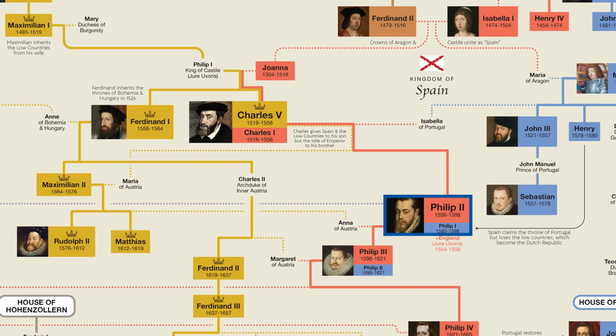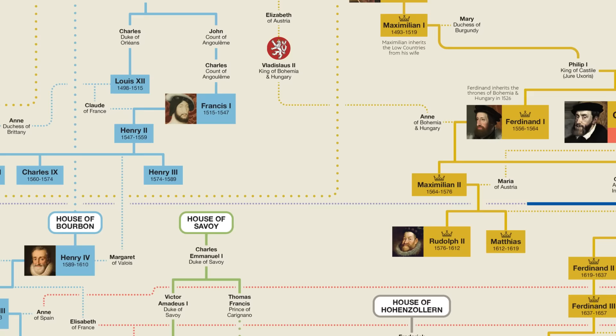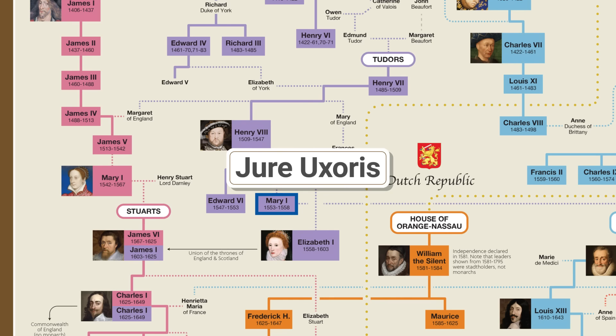Philip II was hence the ruler of Portuguese colonies as well, such as the ones in the Americas, East Indies, and India. It's after him that the country of the Philippines is named. Philip was married to Queen Mary of England, which made him King of England for the duration of their marriage.